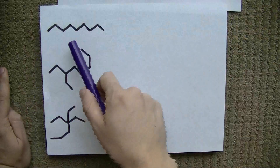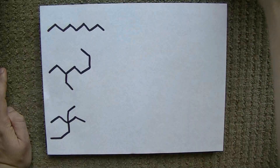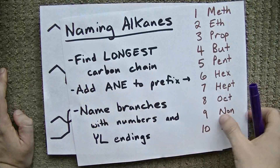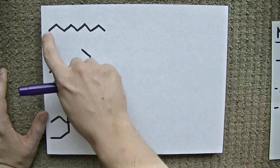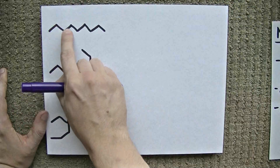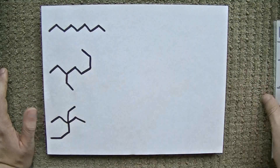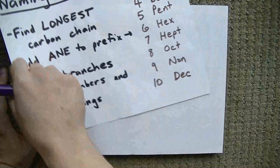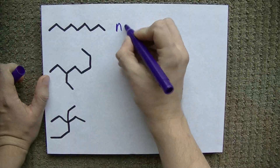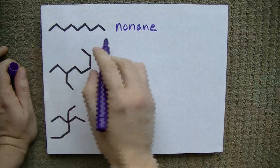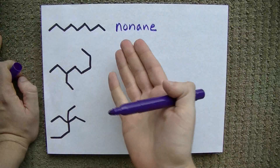Let's try naming these. First, we have this straight chain alkane. Find the longest carbon chain and add "-ane" to the prefix. One, two, three, four, five, six, seven, eight, nine carbons long. Nine is "non," so this here is nonane. And there are no branches, so we're done.